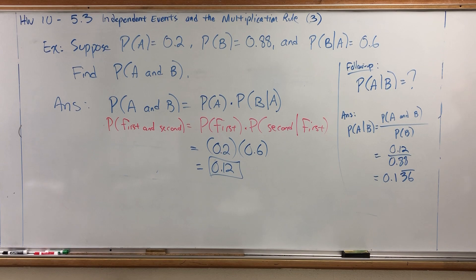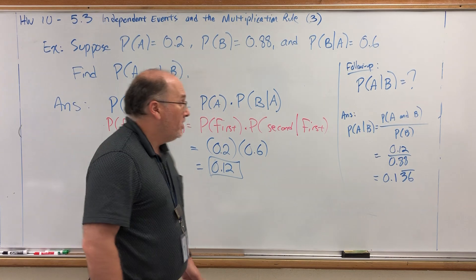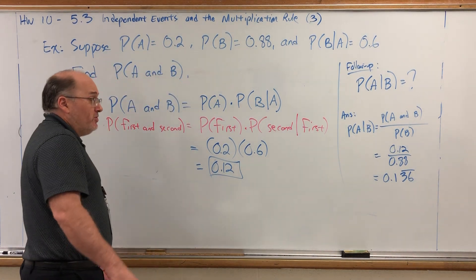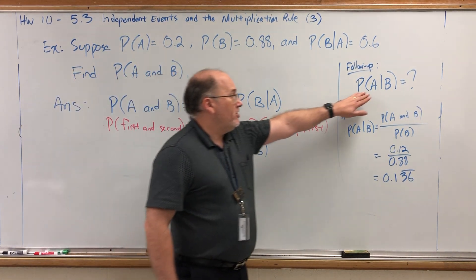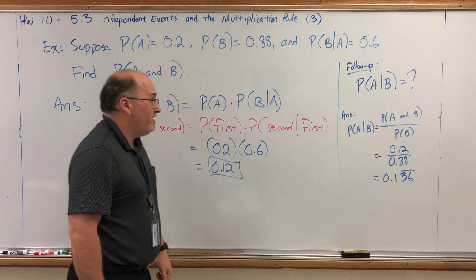Comes out to be 0.136, and the 3-6 is repeating. So they gave us some information that we didn't need, and honestly, in the homework question, we didn't have to use it. But I was kind of wondering if I could use it for something, and the answer is yeah, I can figure out the other conditional probability, the probability of A given that B has occurred.